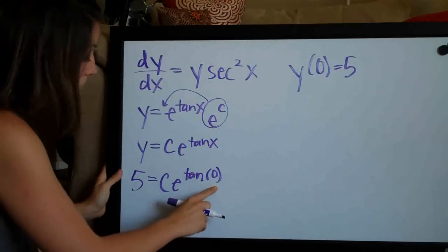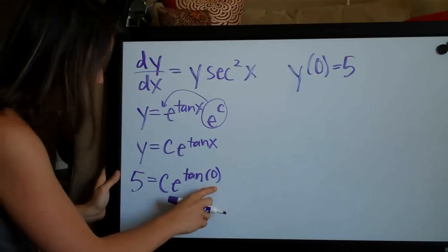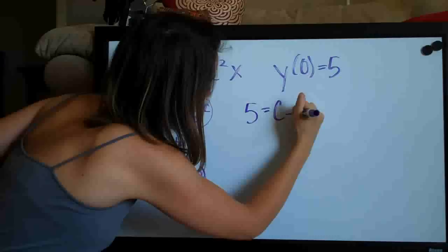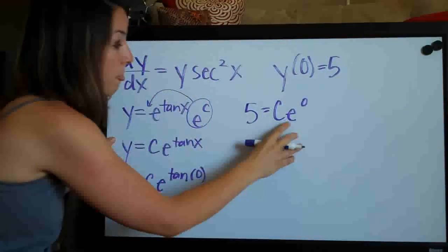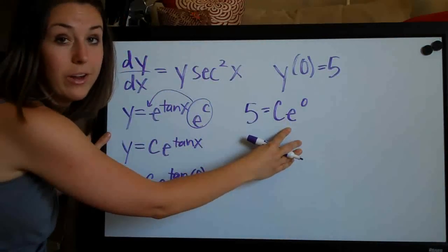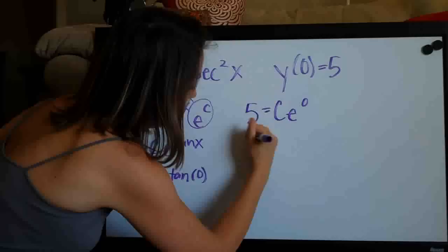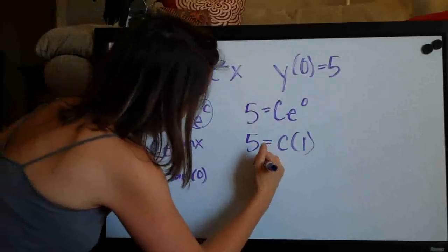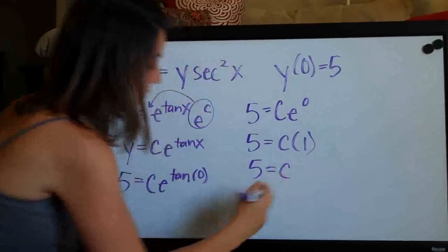Tangent of zero, you can plug that into your calculator if you don't know it but it's just zero. So we'll end up with five equals c e to the zero. Anything raised to the zero power is just one. So we'll end up with five equals c times one and therefore of course five equals c.